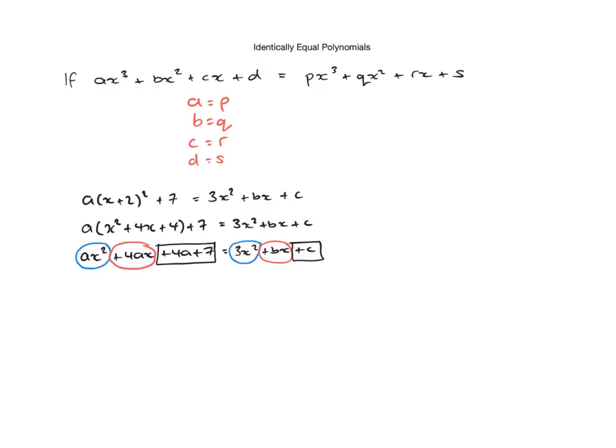And that means that we can essentially set up a set of equations, a set of simultaneous equations, and we can solve for a, b, and c. So if we have a look at the blue ones first, we can see that on the left hand side we have a is equal to 3. Well, that's quite handy, so we now know what a is.